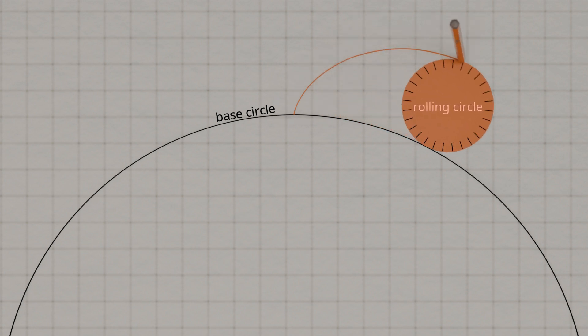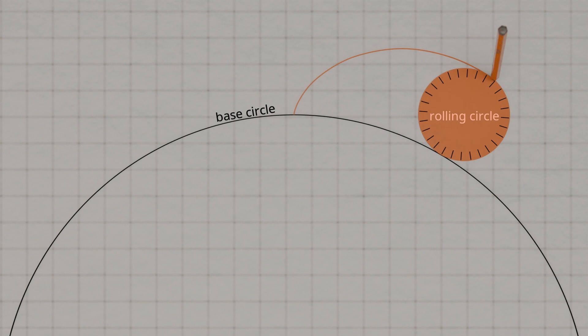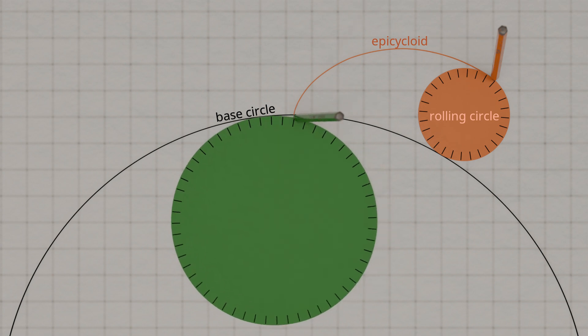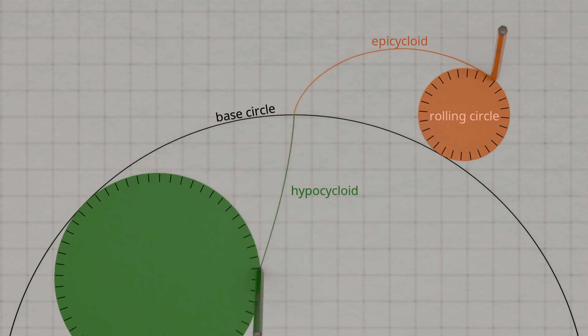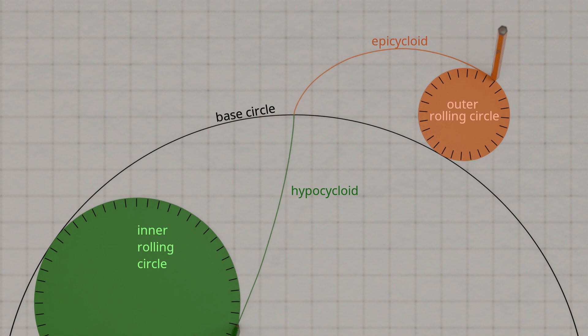A distinction can be made between an epicycloid and a hypocycloid. An epicycloid is created when the circle rolls on the outside of the base circle. If, on the other hand, the circle is rolled on the inside of the base circle, it is called a hypocycloid. Accordingly, a distinction is made between inner and outer rolling circles. Outer rolling circles lead to epicycloids; inner rolling circles lead to hypocycloids.